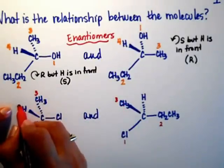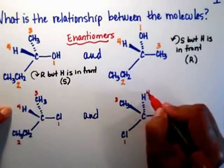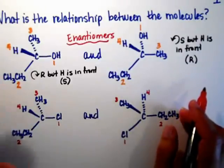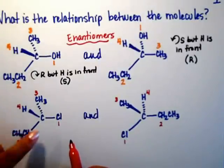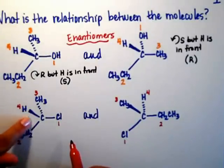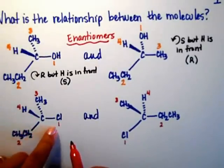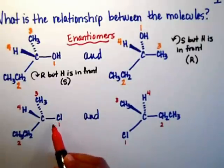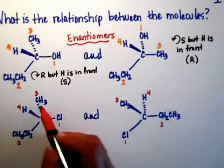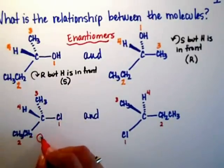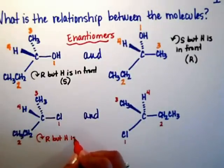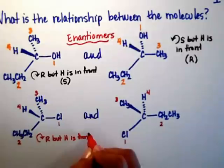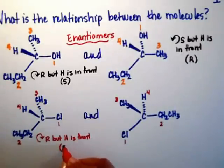Number four is, once again, hydrogen. Hydrogen doesn't need to be number four. It just tends to be number four in a lot of these examples. Hydrogen is on the wedge right here. I have to be very careful. So when I go one, two, three, I have to remember that this is R, but the hydrogen is in the front. So it's the opposite of R. This is the S enantiomer.